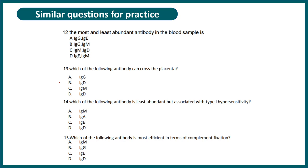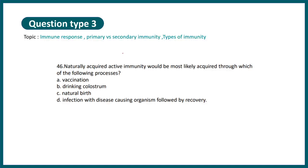Similar practice questions are shown — you can pause and solve them on your own. The common trend here is that questions cover antigen-antibody interaction, types of antibodies, their functions, and unique aspects. You can let me know your answers in the comment section. Question type 3 is from immune response — primary versus secondary immune response, or types of immunity.